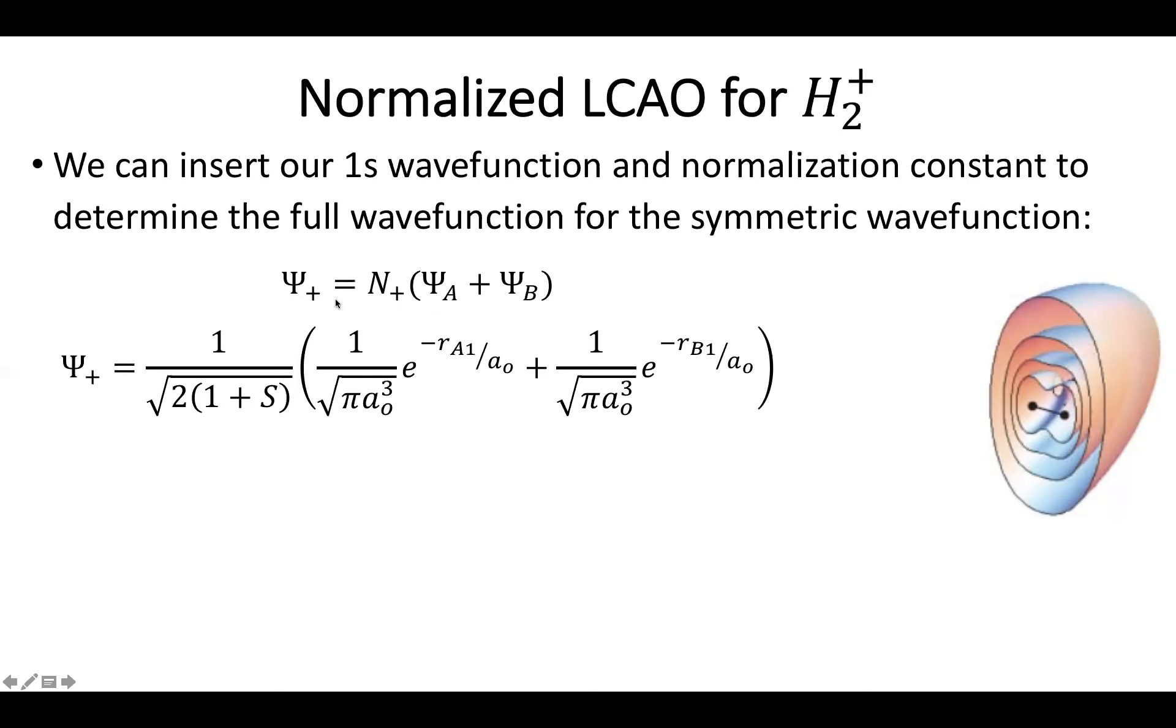So this again is just going to be a constant that depends on S, and my hydrogen orbitals are just my classic 1s hydrogen orbitals. They're a nice big ugly normalization constant times an exponential, which will decrease with the distance of the electron from atom A, and then that's wave function A.